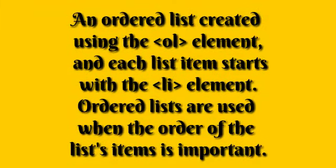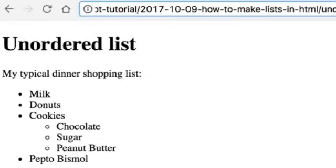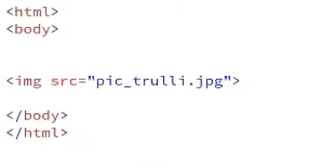An ordered list is created using the OL element and each list item starts with the LI element. Ordered lists are used when the order of the list items is important. An unordered list is typically a bulleted list of items — it will show you the items in bulleted form.